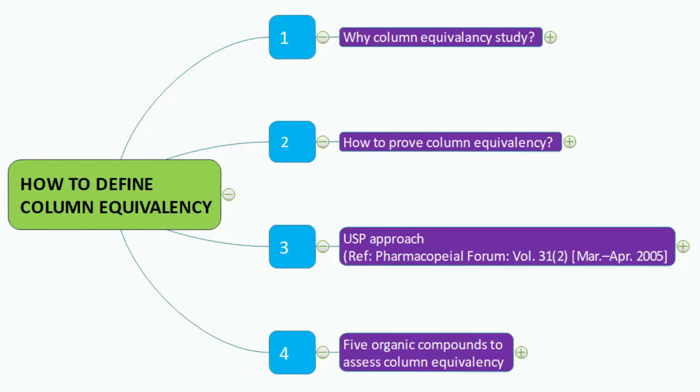Today we are going to talk about how to define column equivalency. It's very important to understand how one can complete the analysis using an alternative column when the specified column is not available. The four important points we'll cover are: why column equivalency is required, how to prove it, the USP approach, and the role of five organic compounds in proving column equivalency.